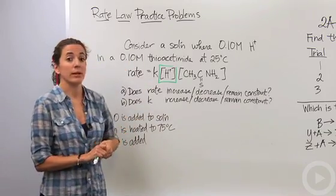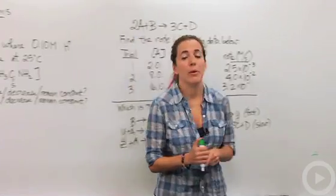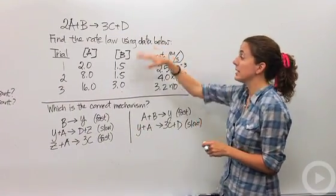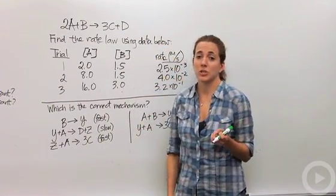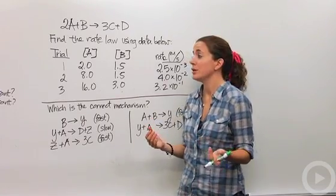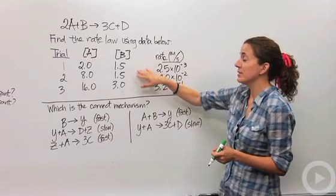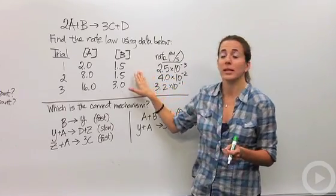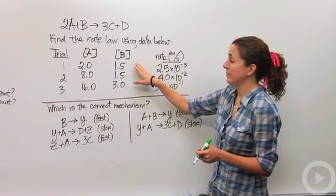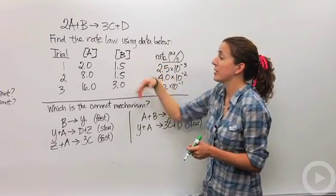So that's one type of problem you might see. Another type of problem deals with finding the actual rate law using data — we've talked about that before. But let's talk about how this problem might be a slight bit different. You're supposed to figure out the rate when comparing two different trials.